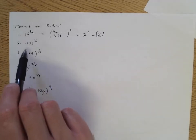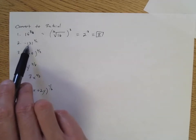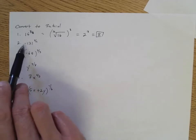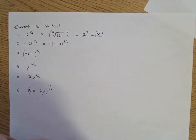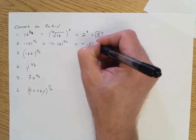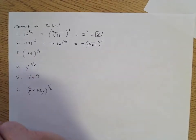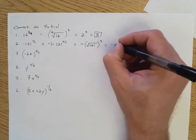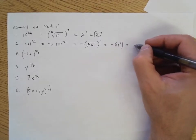For numbers two and three, look closely — it's important to understand how they're written with the parentheses. Number two does not have any parentheses, so the base is just positive 121 and the negative is separate. This is like negative one times 121 to the power of three-halves, so rewritten as a radical it's negative square root of 121 to the power of three. The square root of 121 is 11, so we have negative 11 to the power of three, which is negative 1331.